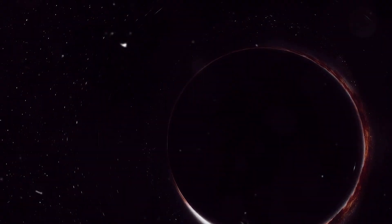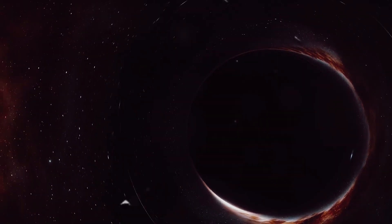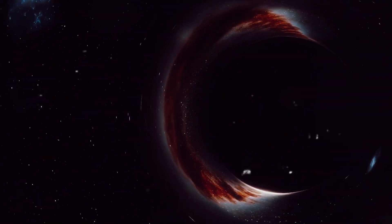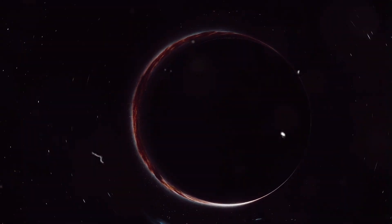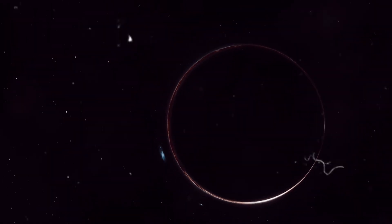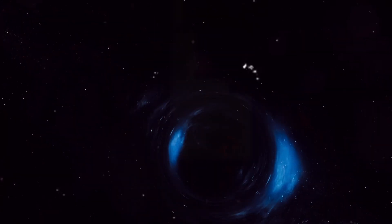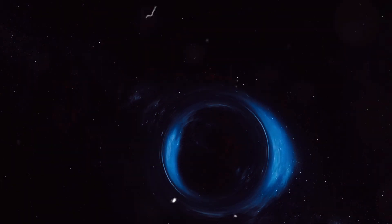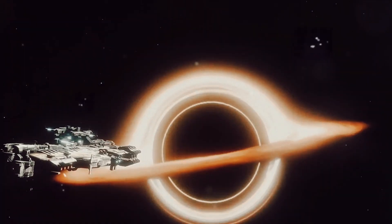The boundary marking the point of no return, where nothing, not even light, can escape the black hole's gravitational pull, is called the event horizon. Now, contrary to popular belief, black holes do not suck objects in like a cosmic vacuum cleaner. Instead, objects fall into them, much like how an apple falls from a tree due to Earth's gravity.